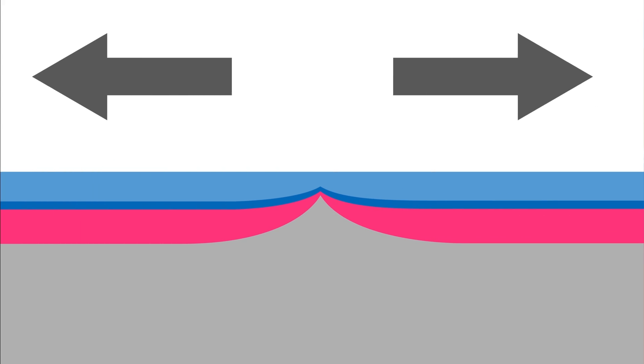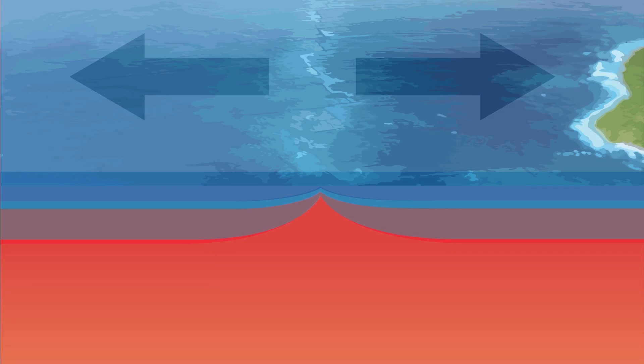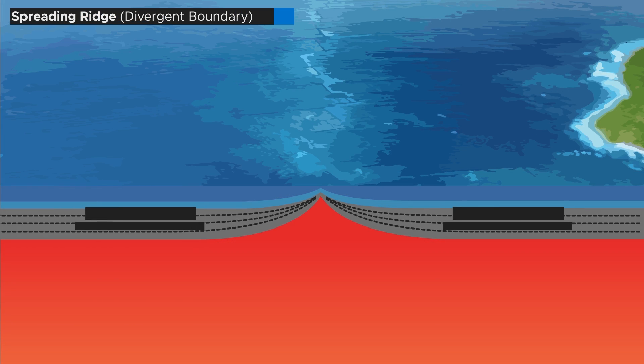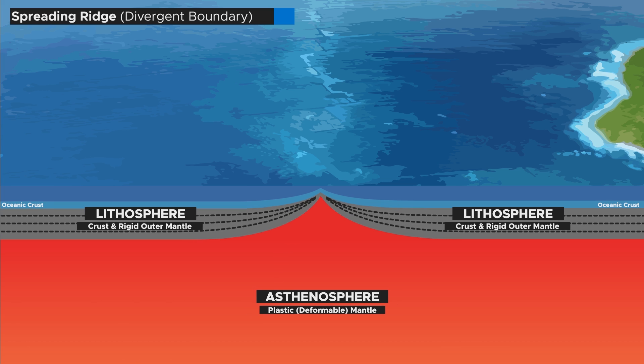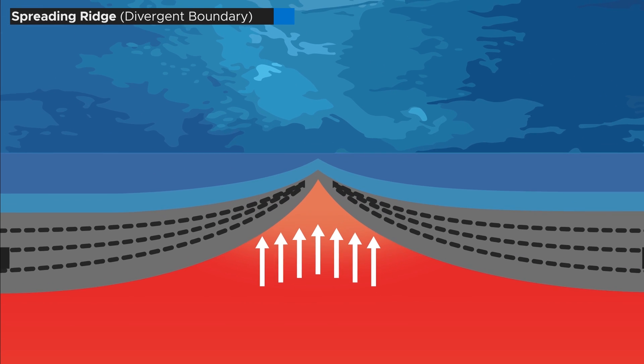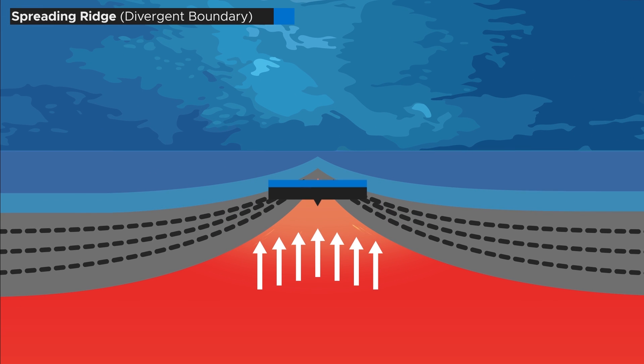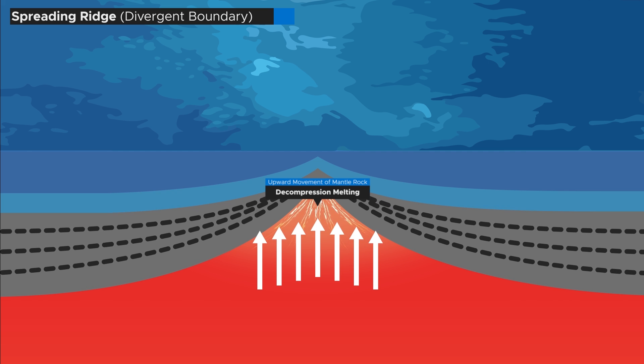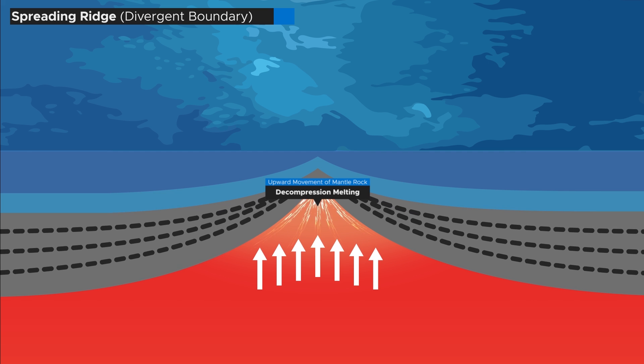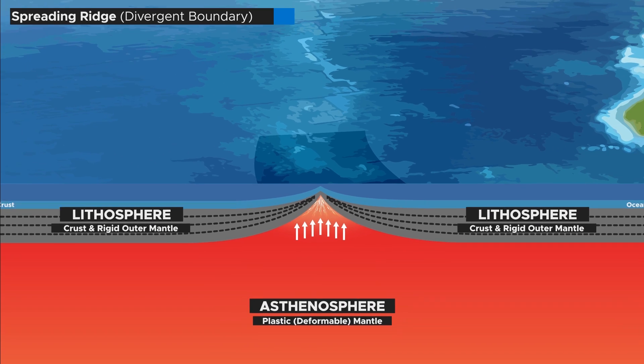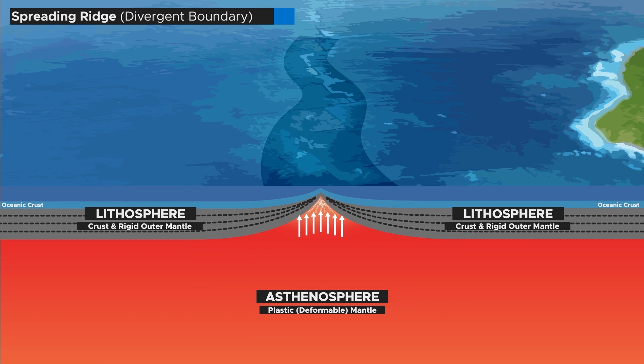In contrast, divergent boundaries are zones where two plates move apart. Here a spreading ridge, either in form of a rift valley or a mid-ocean ridge, is created, through which hot mantle material can rise to the surface. This also reduces the melting point of the rocks, this time as a result of decompression melting, caused by the reduction in pressure during the ascent. The resulting magma then leaks onto the surface, cools and creates new ocean floor in form of giant undersea mountain ranges.